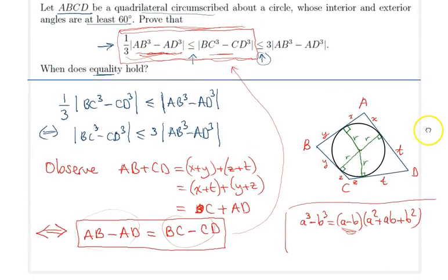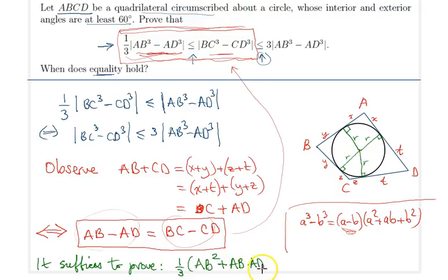Therefore, I claim that it suffices to prove that one-third of AB squared plus AB times AD plus AD squared is less than or equal to BC squared plus BC times CD plus CD squared. So that's exactly our aim goal from now on. We can reduce this problem to this inequality. Let me open a new page and then let's move on.